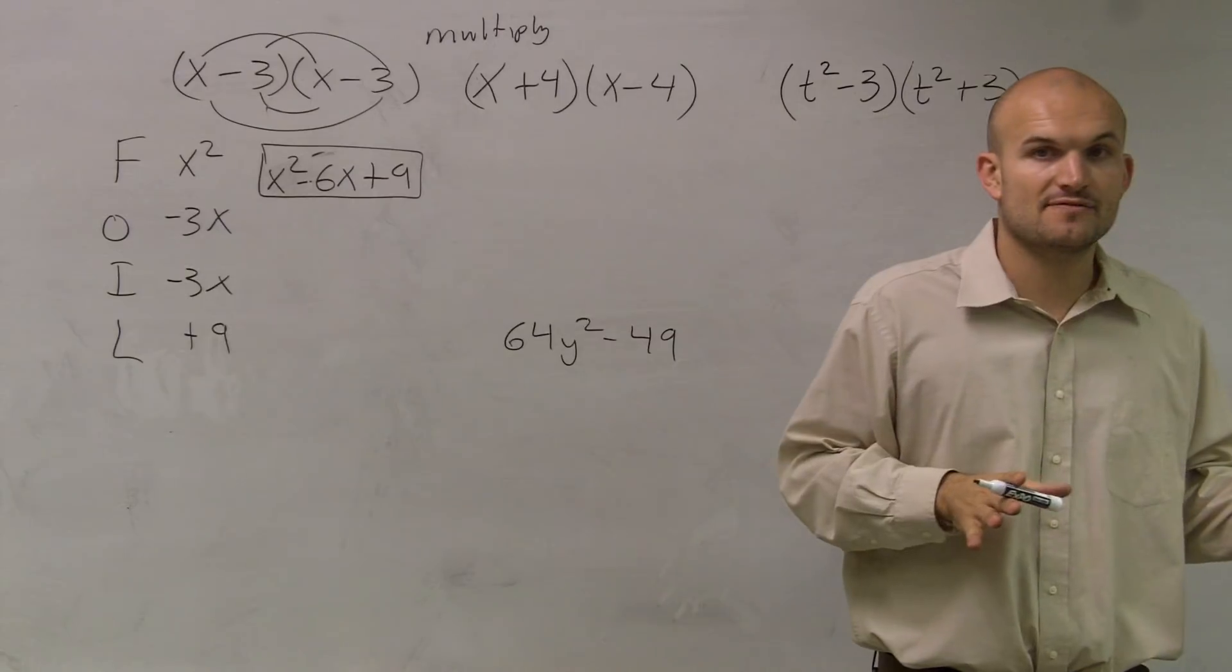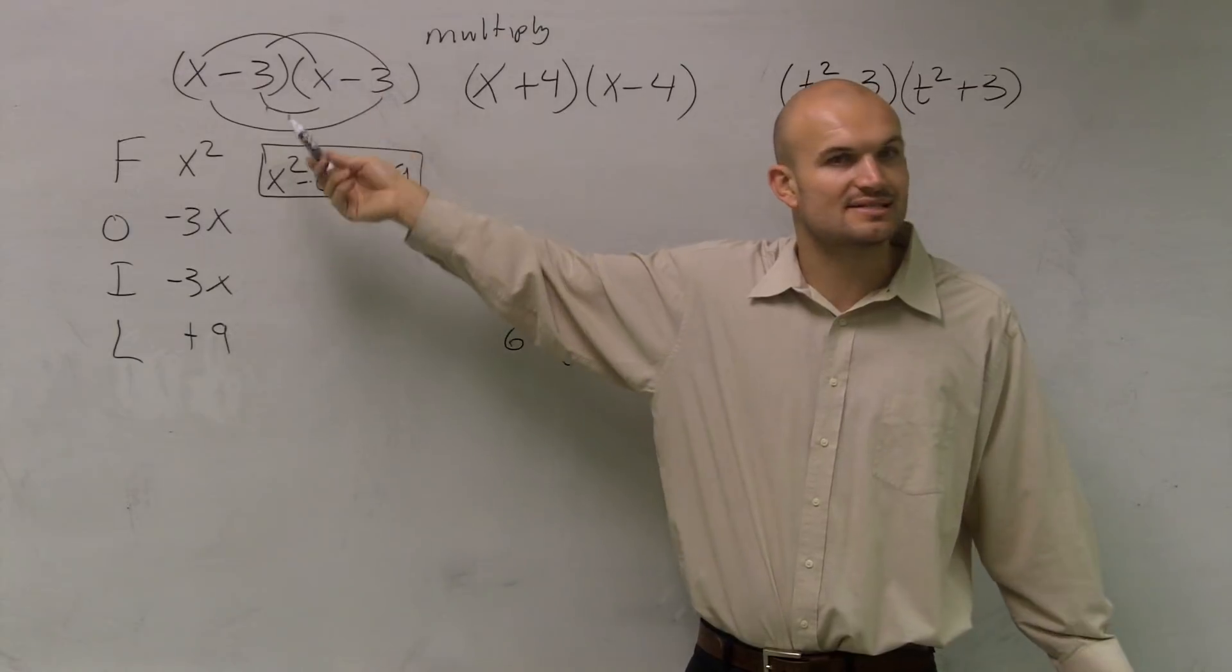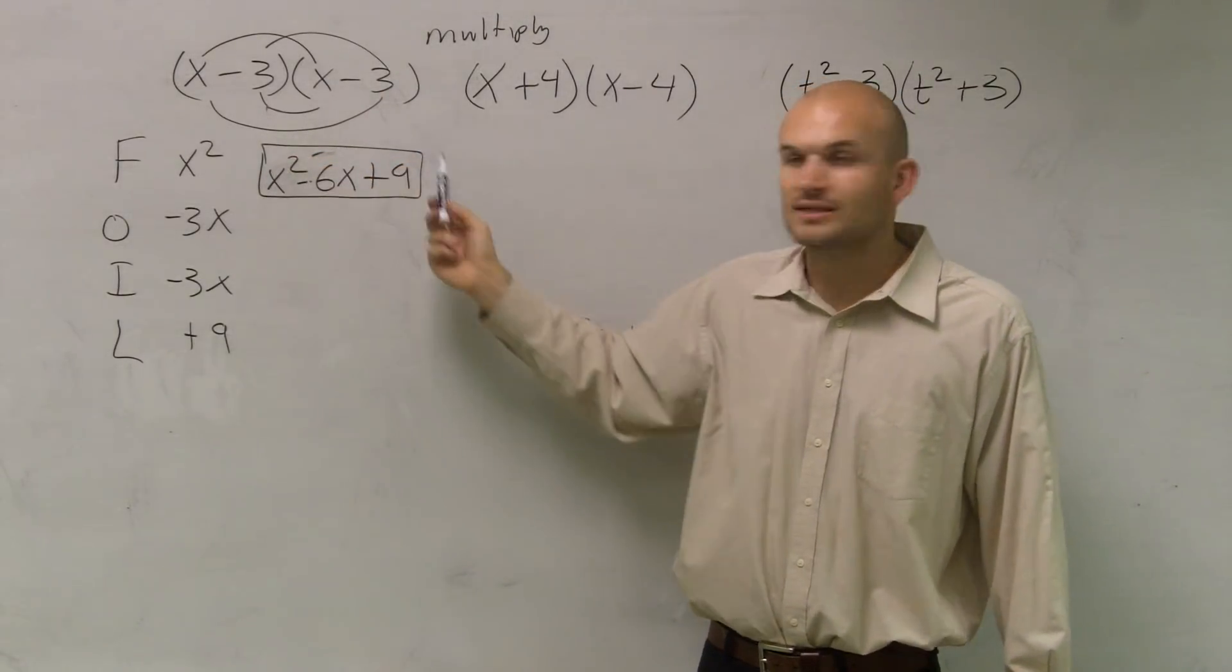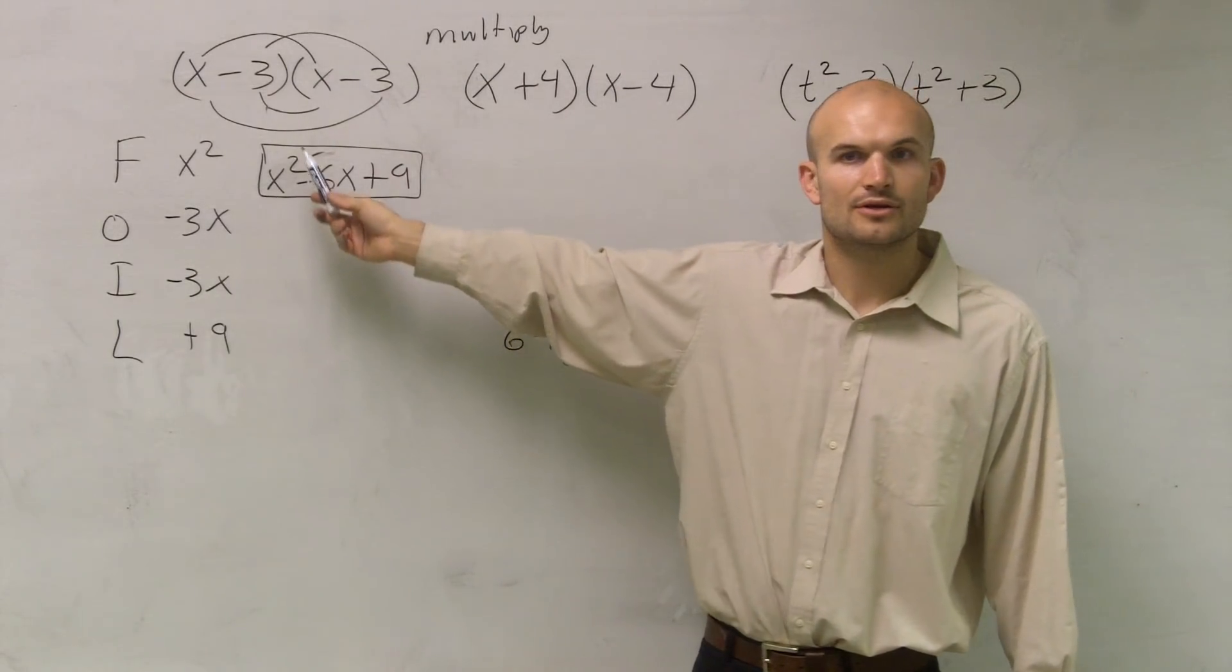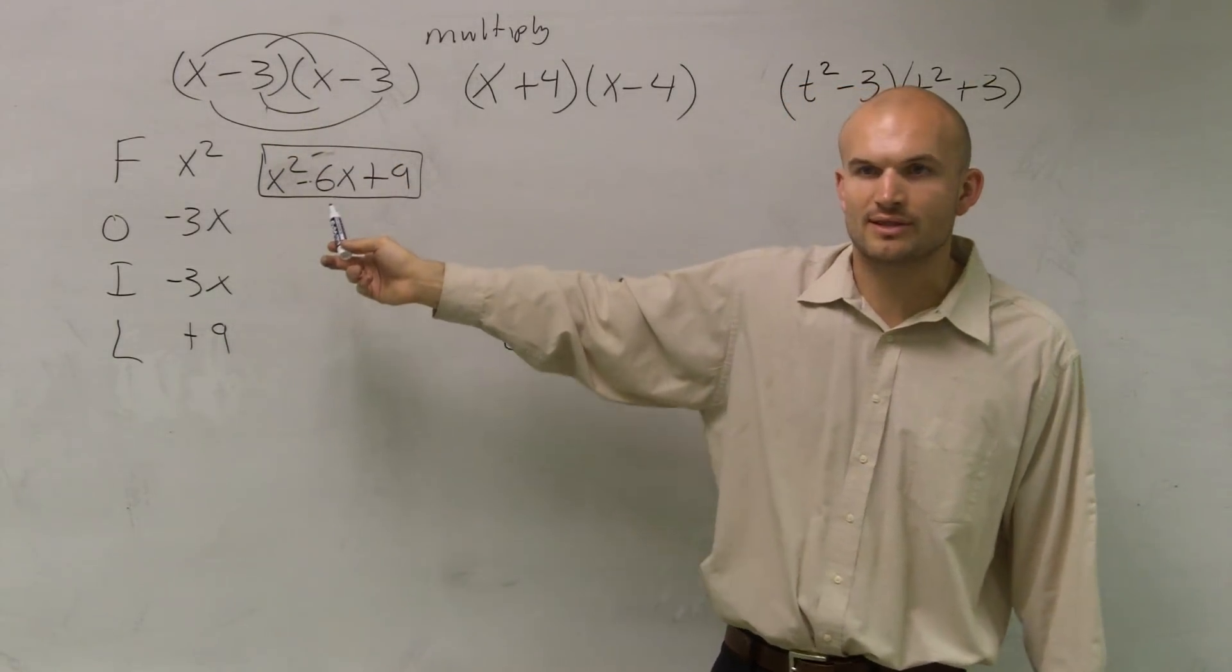Number by the same number, okay, Jeff? And when you multiply the same binomial times itself, you get the first two terms multiplied, the last two terms multiplied, and then double your middle term, right?